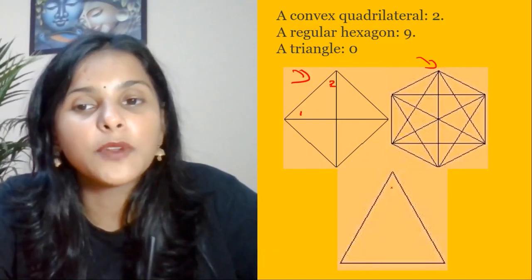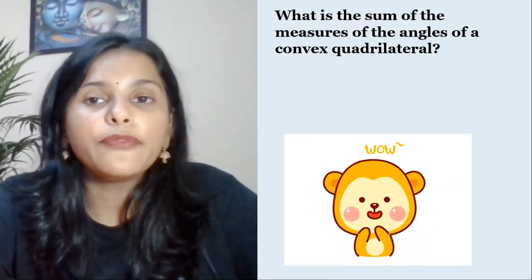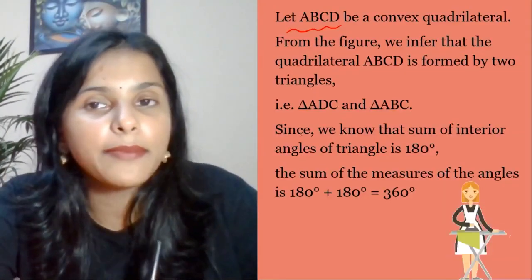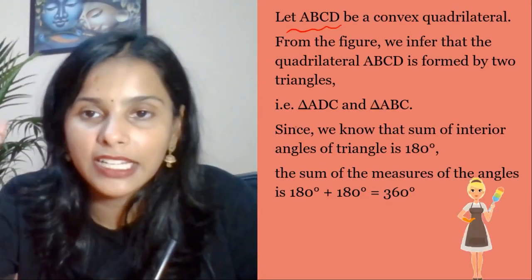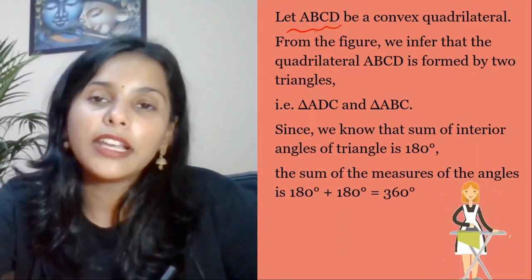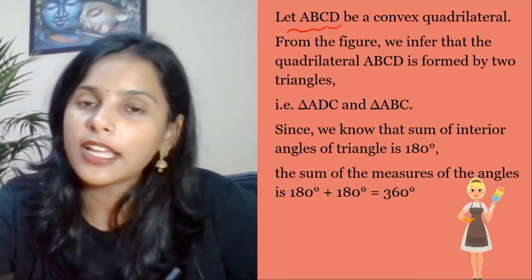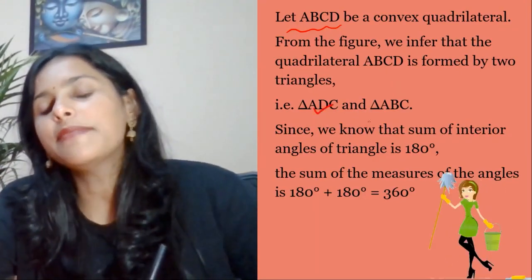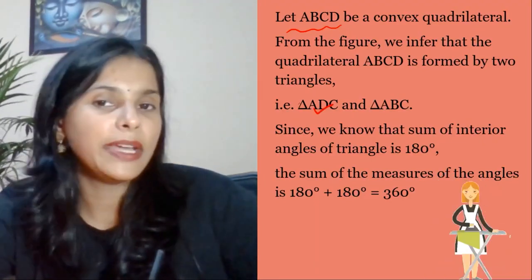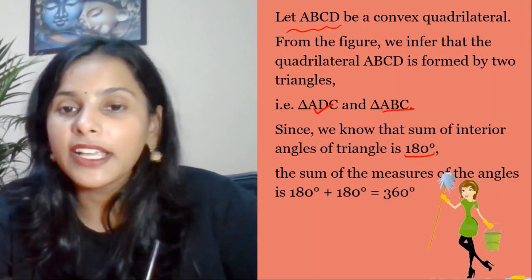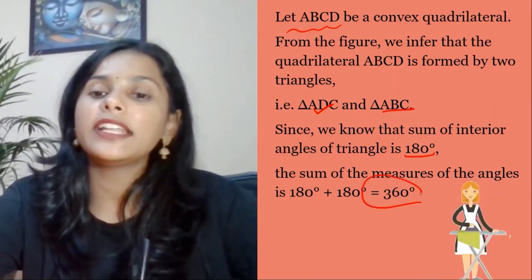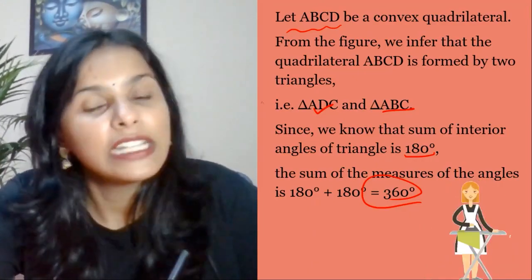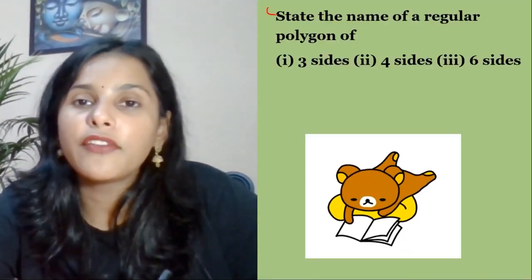So the answers are: nine and zero. Next question: what is the sum of measures of angles of a convex quadrilateral? Let's do the work. We have a convex quadrilateral ABCD with four sides, so two triangles are formed: ADC and ABC. We know the sum of angles of each triangle is 180 degrees, so 180 plus 180 is 360. Therefore the sum of angles of a quadrilateral is 360 degrees.